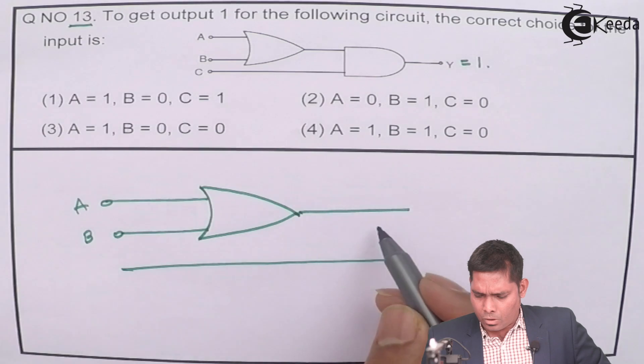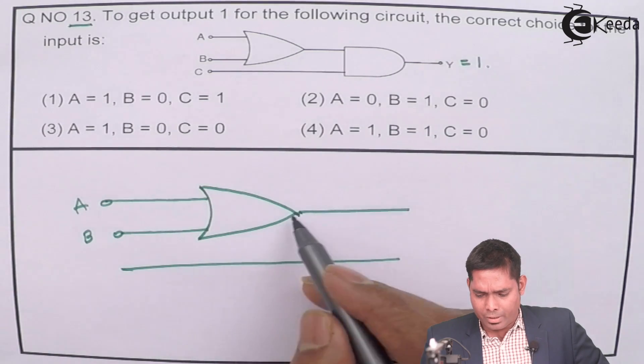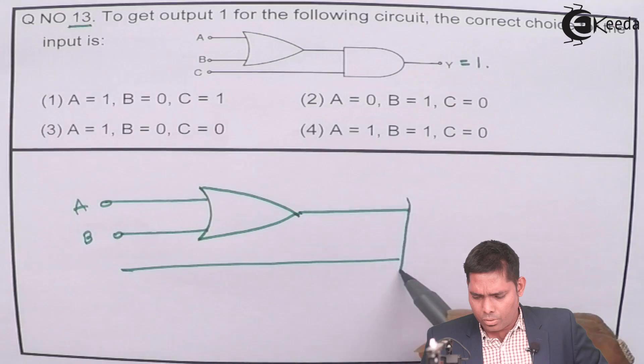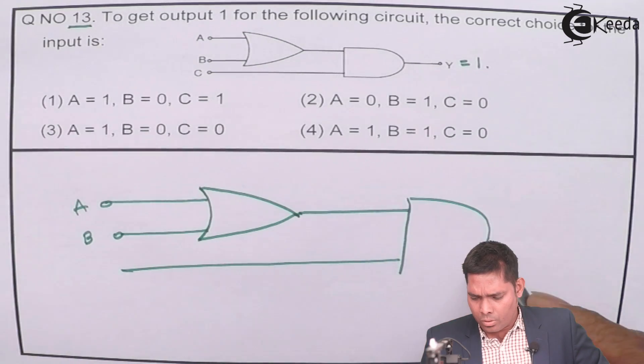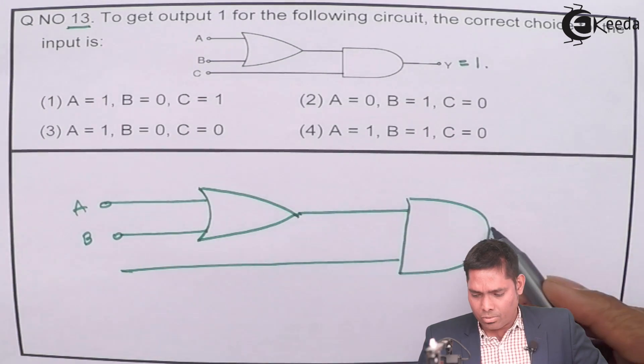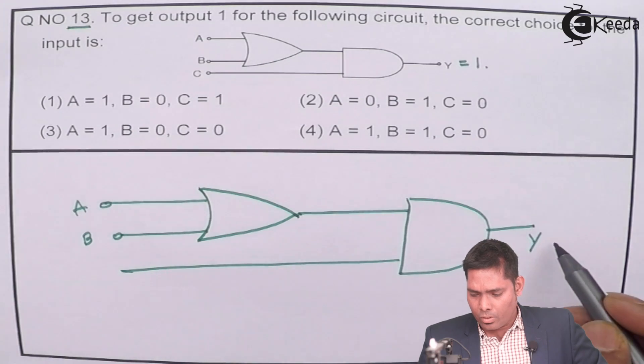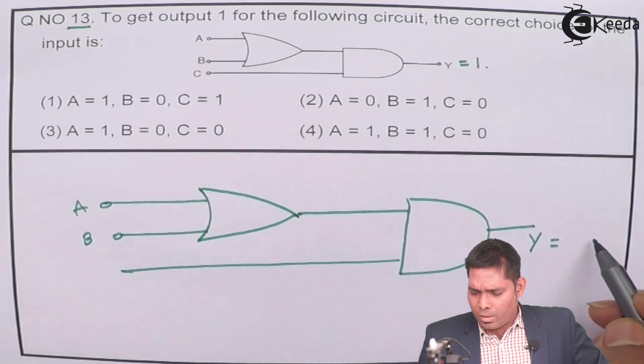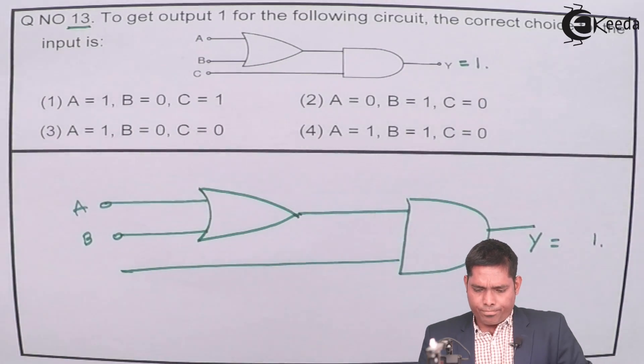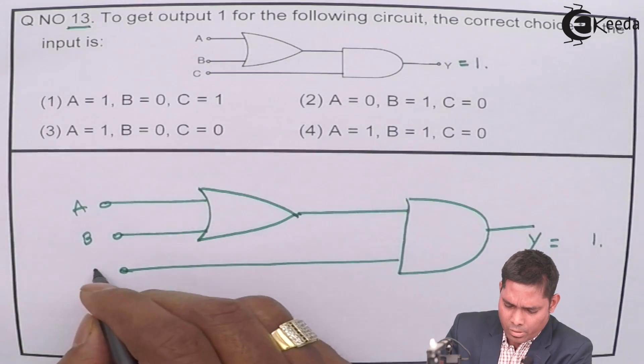The output of this OR gate is fed to the input of the AND gate, and this is your Y. We need to get Y equals 1, and this is the input C.